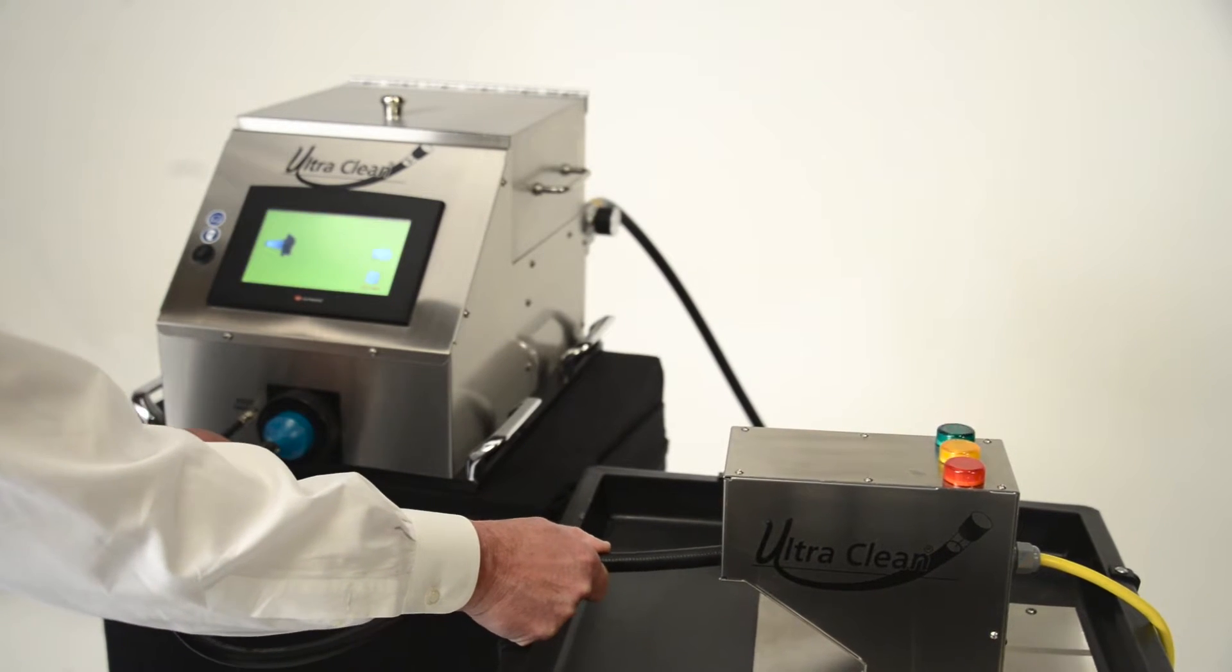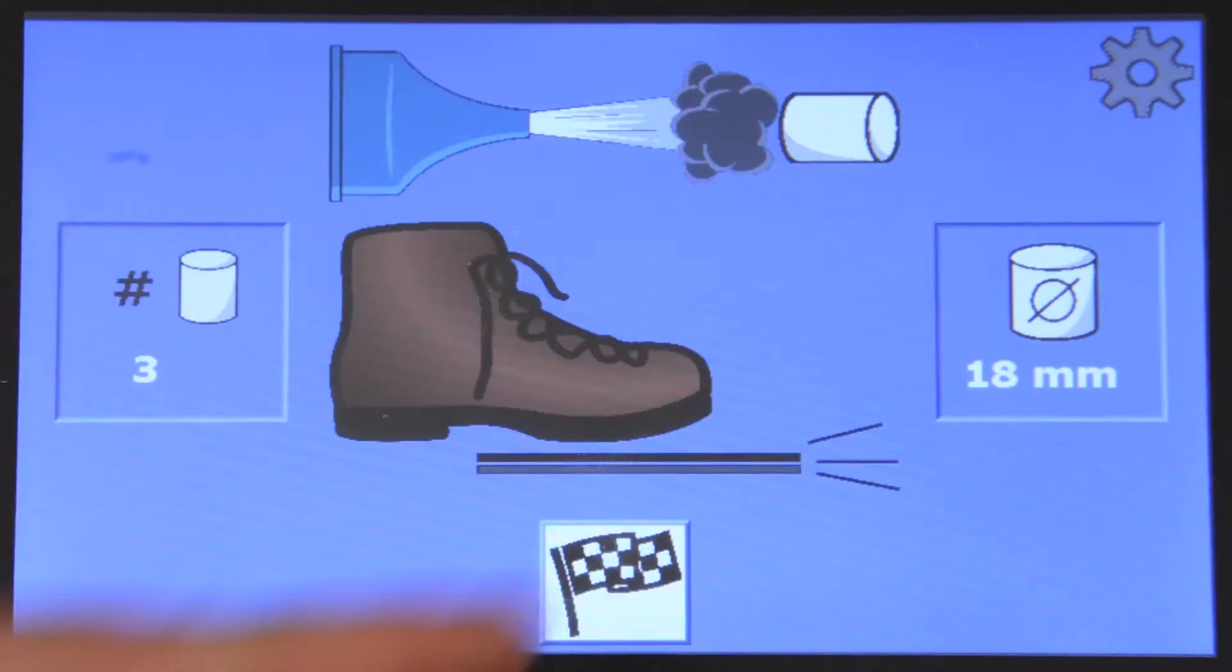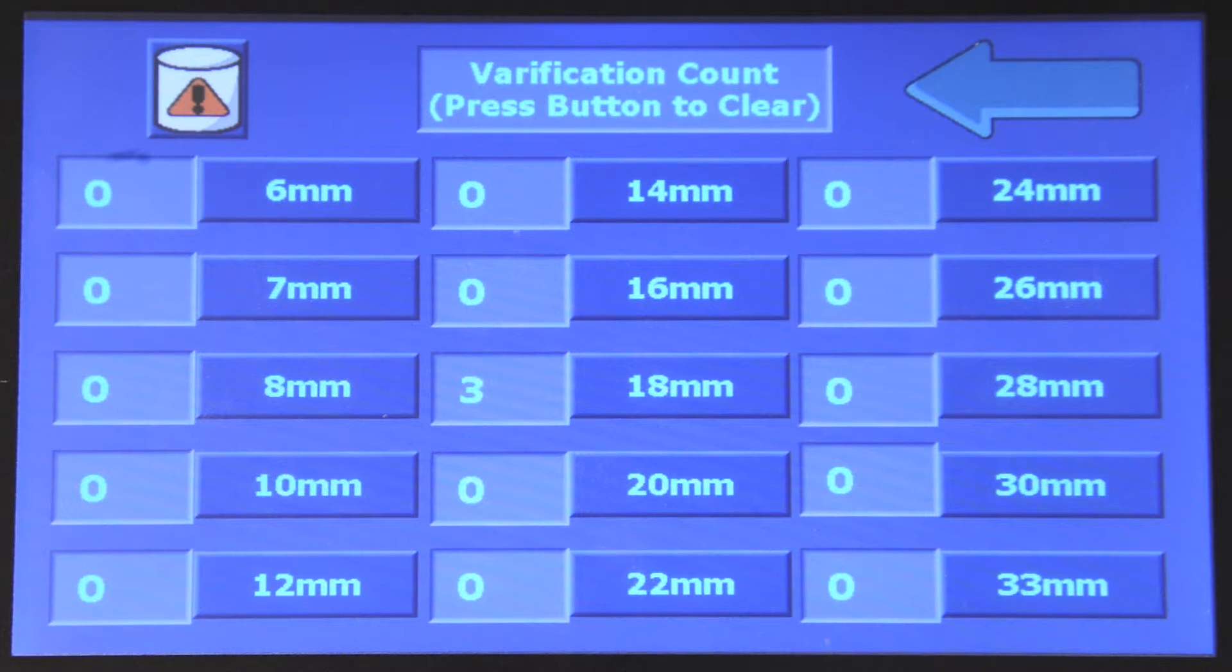All projectile verifications and faults are counted by the system. You can access the information by pressing the counter information button. The projectile verification counters can be manually reset to zero by pressing the size button for each projectile size.